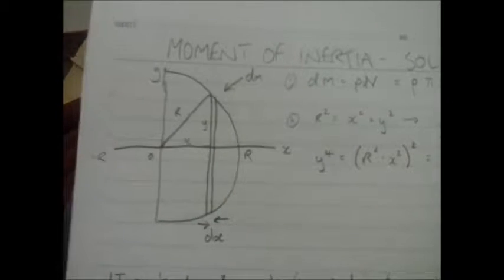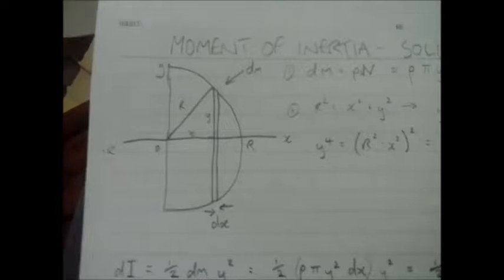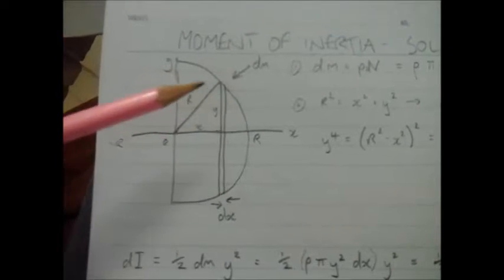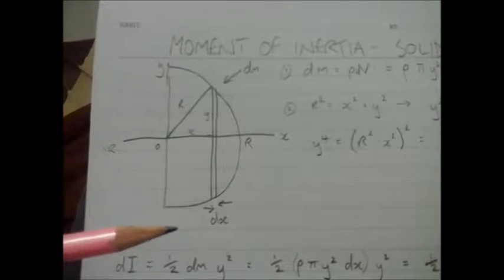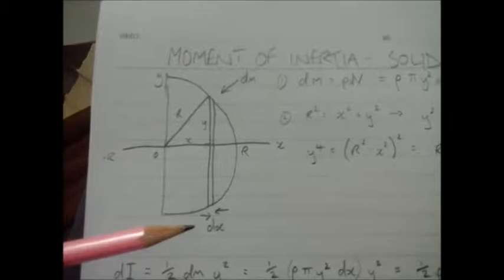What I'm going to do is slice that hemisphere up into infinitesimally small cylinders. Where I've drawn one on there, I've shown one of the slices. Now that slice is going to have a certain amount of mass dm and it's going to have a tiny infinitesimally small width dx.